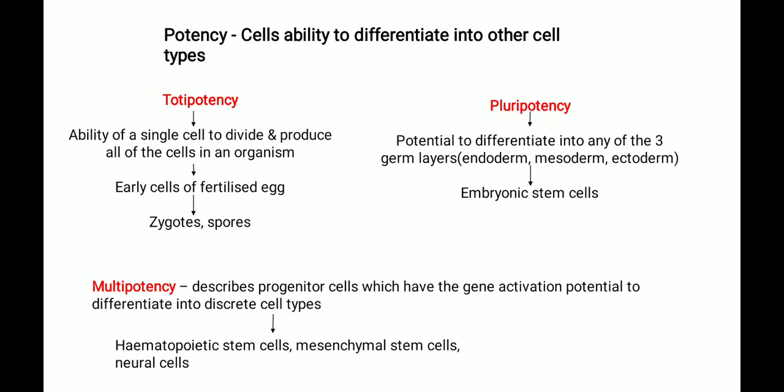Totipotent cells have the greatest differentiation potential — they are capable of giving rise to any other cell type. Examples include the zygote and spore. The zygote is the fusion of male and female gametes through fertilization, and from the zygote we can produce a whole organism.